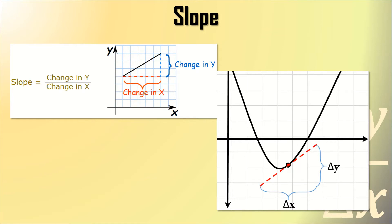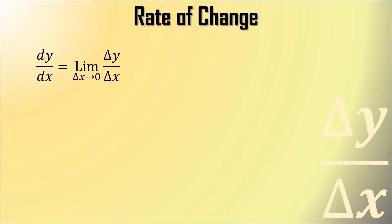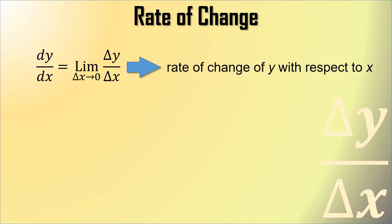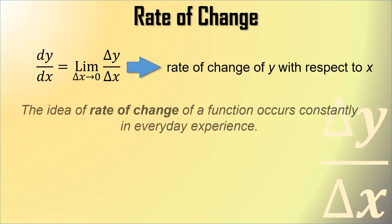What if our slope will be applied to curves? What if we are going to find the slope of a quadratic equation or a curve? At a given point, we have to interpret this into a linear form in order to obtain the slope of the curve at a certain point. The rate of change is given by dy/dx, which is equal to the limit of delta y with respect to x as delta x approaches 0.